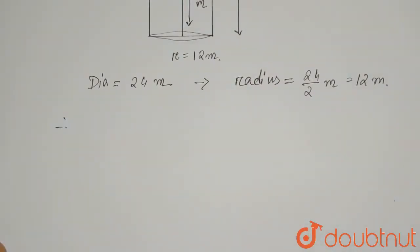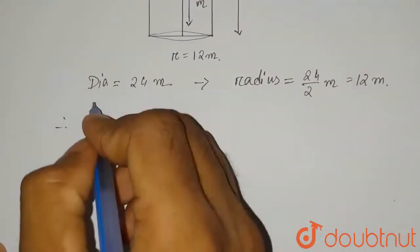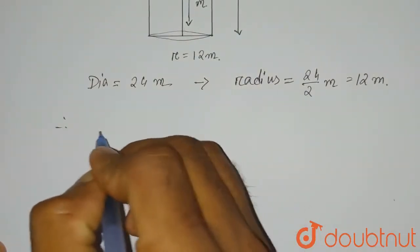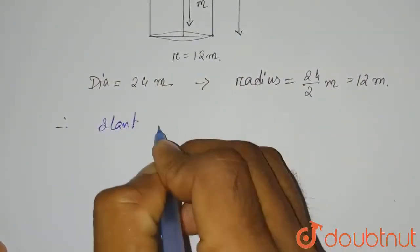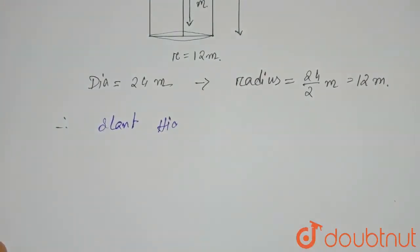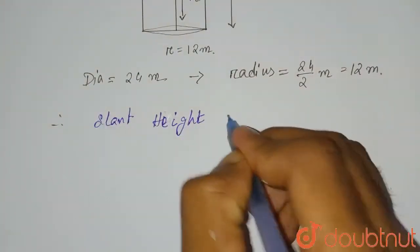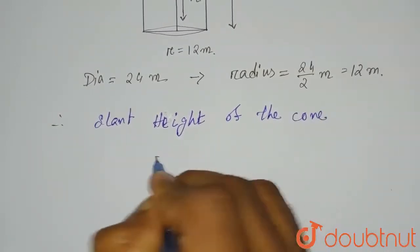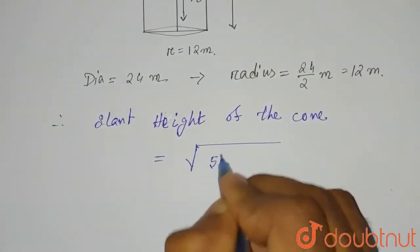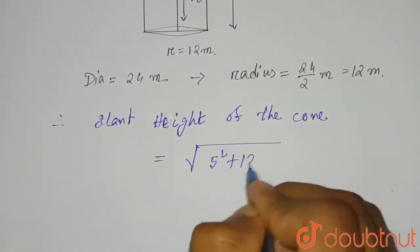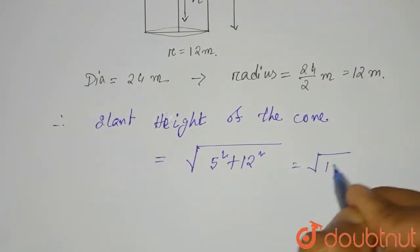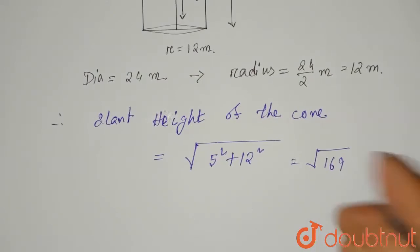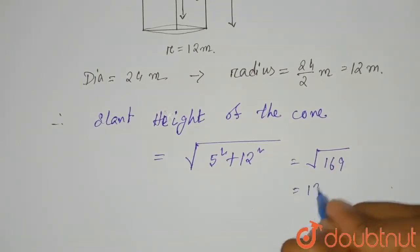Therefore, the slant height of the cone equals root of 5 squared plus 12 squared, which is root of 169. Since 5 squared is 25 and 12 squared is 144, in total they make 169, so the slant height is 13 meters.